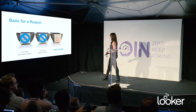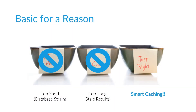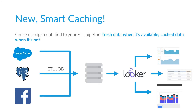Luckily, we have smart caching now. Smart caching is basically tying your cache in Looker to the ETL jobs that you're running for your database. You're taking your data from all these different data sources and running ETL jobs to get it into your database, and now Looker is able to actually know when that happens. Based on the data you're bringing in, we can actually refresh your cache — invalidate it and let you get that fresh data, but only when it's actually there.